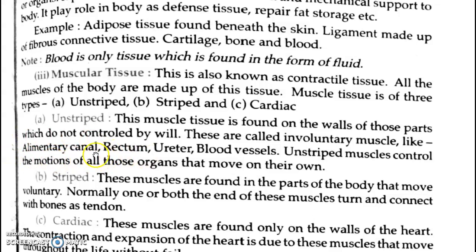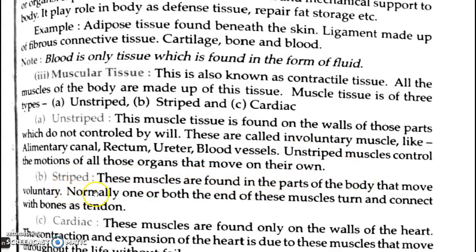Examples of unstriated muscle locations include rectum, urinary system, and blood vessels. Unstriated muscles control the motion of all those organs that move on their own.